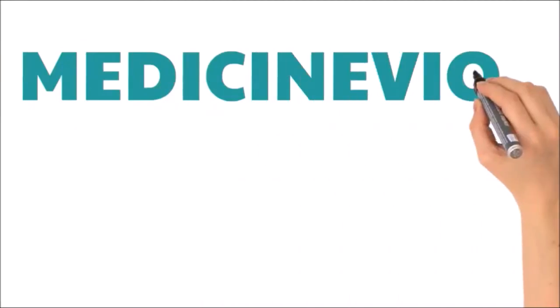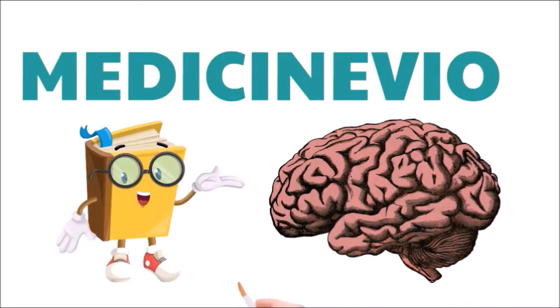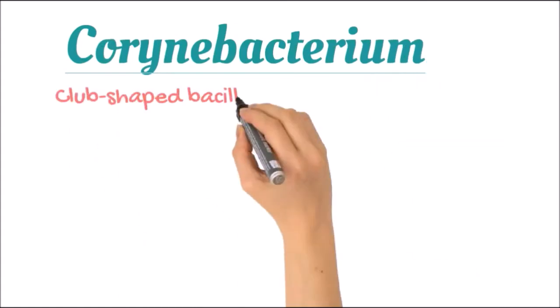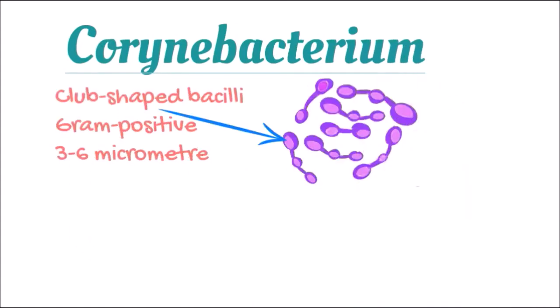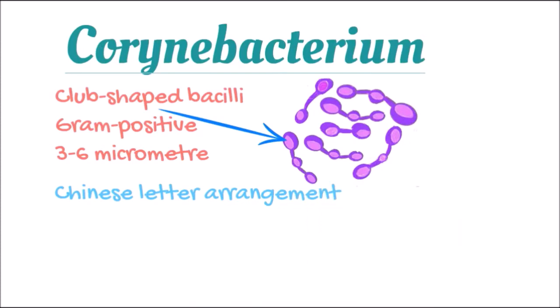Welcome to Medicina Evio. In this video we will discuss Corynebacterium diphtheriae, which is a club-shaped bacilli that takes up gram stain and measures 3 to 6 micrometers in length. It is also arranged in a Chinese letter pattern.